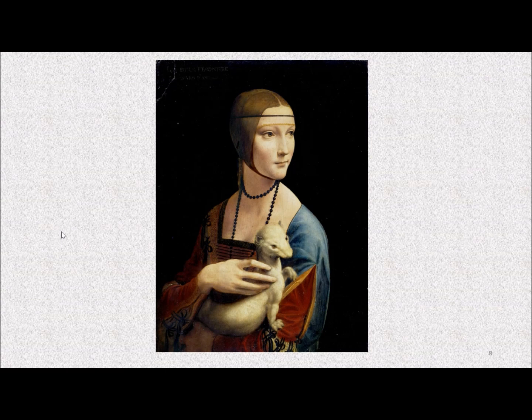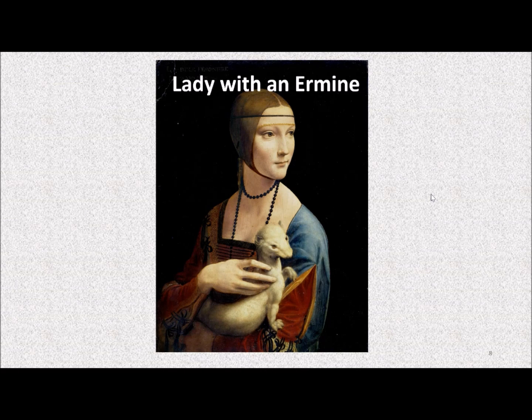Another well-known example of a painting by Leonardo da Vinci is this one here, entitled Lady with an Ermine. This is the lady, and the animal she's holding in her arms is an ermine. This painting is a good example of the style used by Leonardo and others as they painted people from the noble classes during the Renaissance.